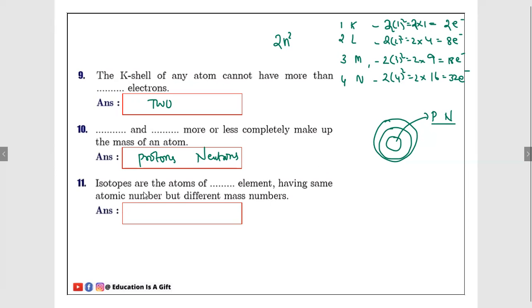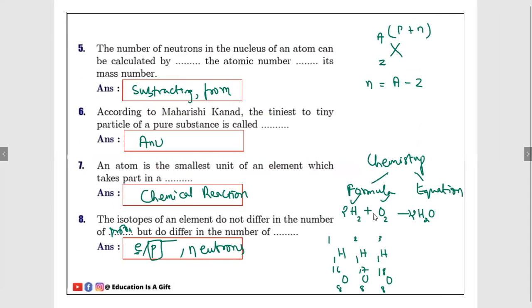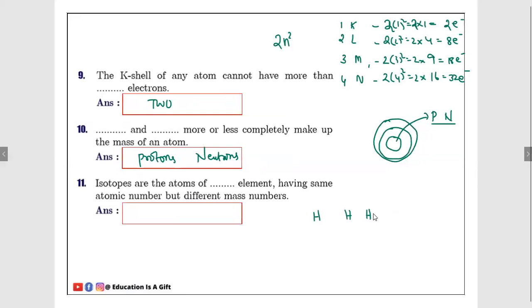Number eleven: Isotopes are the atoms of dash elements having same atomic number but different mass number. If you see hydrogen, hydrogen, hydrogen in the previous example of eighth question. Hydrogen, hydrogen, hydrogen, oxygen, hydrogen, oxygen. Here we are taking isotopes are the atoms of same elements. So here we have to take same elements.